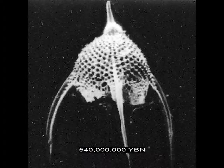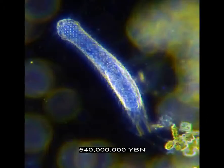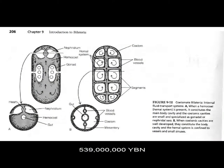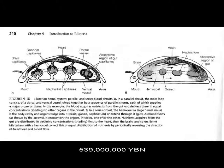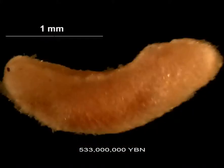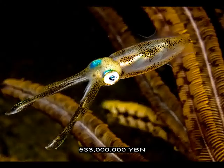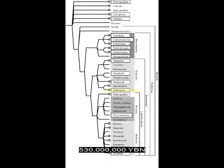Platyzoa Platyhelminthes — flatworms. Protists radiolaria. Protists foraminifera. Platyzoa Gastrotricha. The first circulatory system evolves in bilaterians. The first heart evolves in bilaterians. Trochozoa Nemertea — ribbon worms. Trochozoa mollusks evolve — mollusks include snails, clams, mussels, and the cephalopods: squids and octopuses.